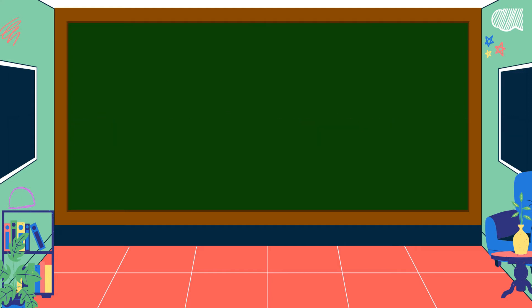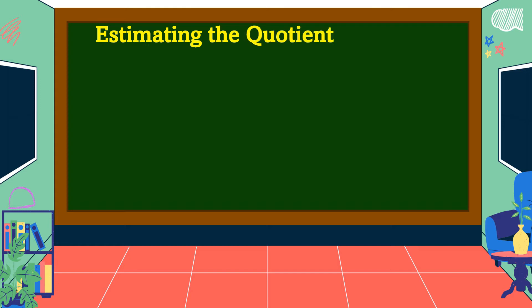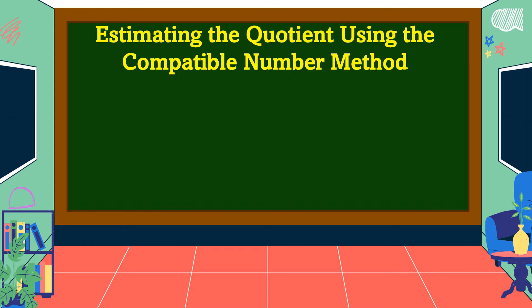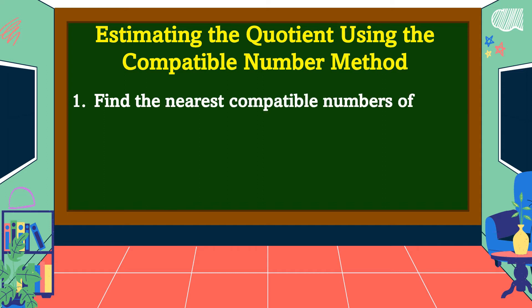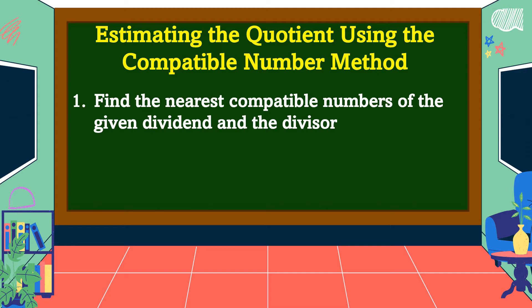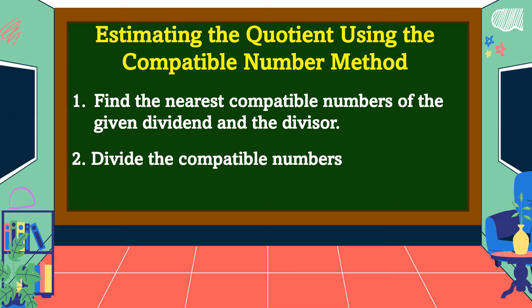These are the steps in estimating the quotient using the compatible number method. Number 1: find the nearest compatible numbers of the given dividend and the divisor. Number 2: divide the compatible numbers to get the estimated quotient. But what do you mean by compatible numbers?